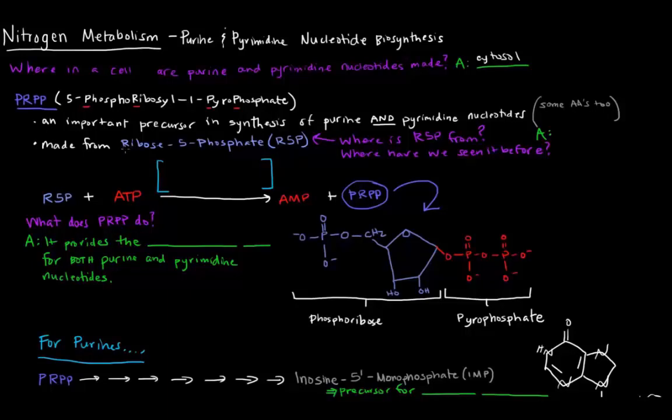PRPP is made from ribose 5-phosphate, and that should be familiar. Where is this ribose 5-phosphate from? Where have we seen it before? Well, in a previous video, if you recall, we talked about it being one of the products of the pentose phosphate pathway. We mentioned that the ribose 5-phosphate was important in nucleotide synthesis, so here we're talking about exactly how that's happening.